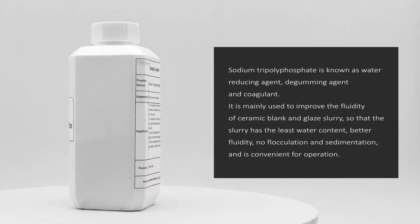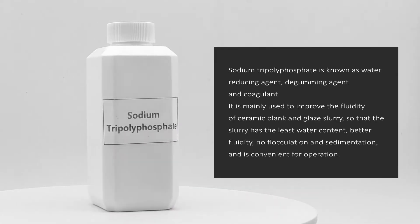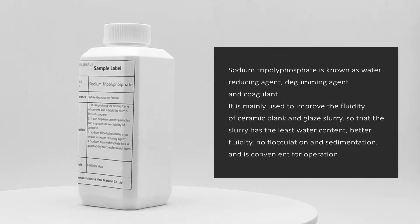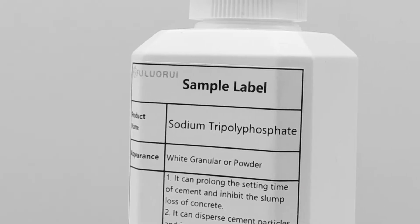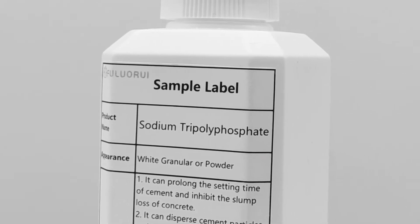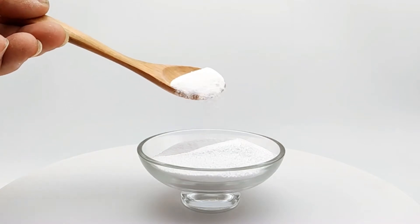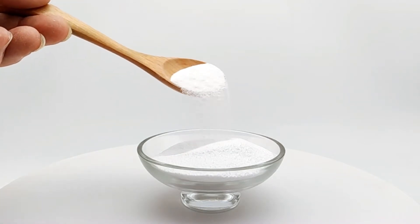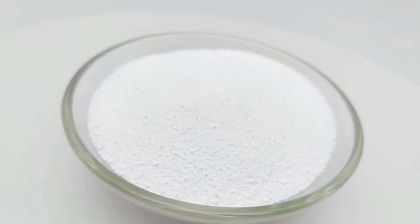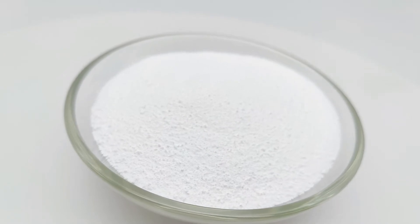Sodium tripolyphosphate is known as a water reducing agent, de-gumming agent, and coagulant. It is mainly used to improve the fluidity of ceramic blank and glaze slurry, so that the slurry has the least water content, better fluidity, no flocculation, and sedimentation, making it convenient for operation.